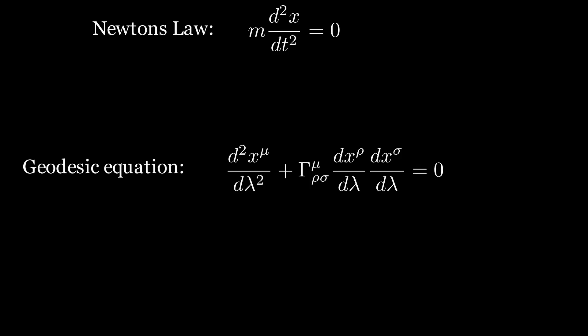In flat space, even if one chooses a coordinate in which the Christoffel symbols are non-zero, it is still possible to change to a coordinate system in which the symbols vanish everywhere. This is not true in curved space. But for now, we will assume we are in flat space and choose a coordinate system in which the symbols are zero everywhere, like Cartesian coordinates.